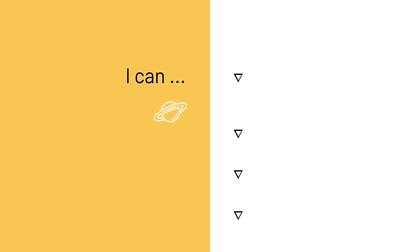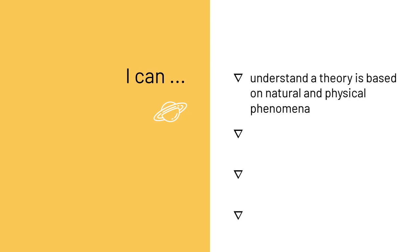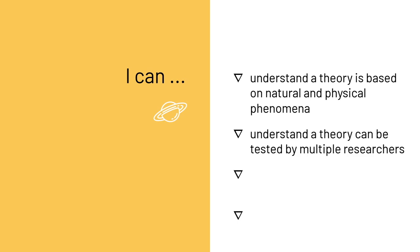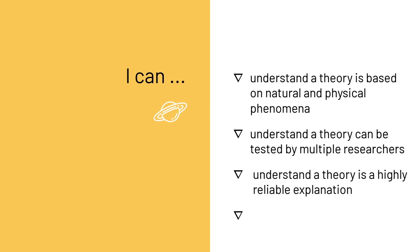The success criteria for this lesson are: I can understand a theory is based on natural and physical phenomena. I can understand a theory can be tested by multiple researchers. I can understand a theory is a highly reliable explanation. And I can recognize that theories can change.